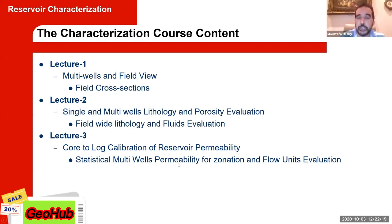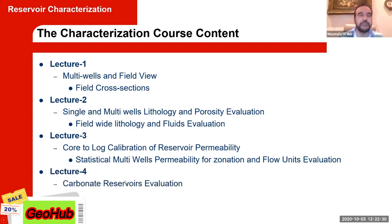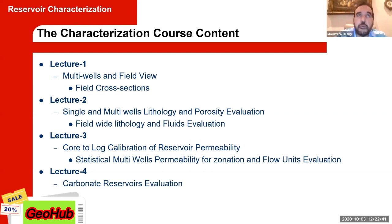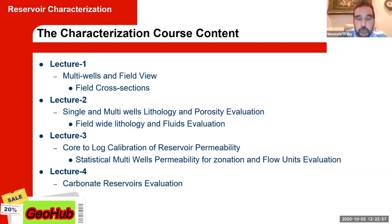Statistical evaluation will determine the zonation — how we pick it and how we determine the flow units in our reservoir. Lecture four will talk specifically about carbonates. Most of what you study undergraduate is based on clastics. Clastics are also difficult, but not as difficult as carbonates. In the industry we say carbonate is a different animal, so I will leave a full lecture on how we evaluate carbonate rocks.